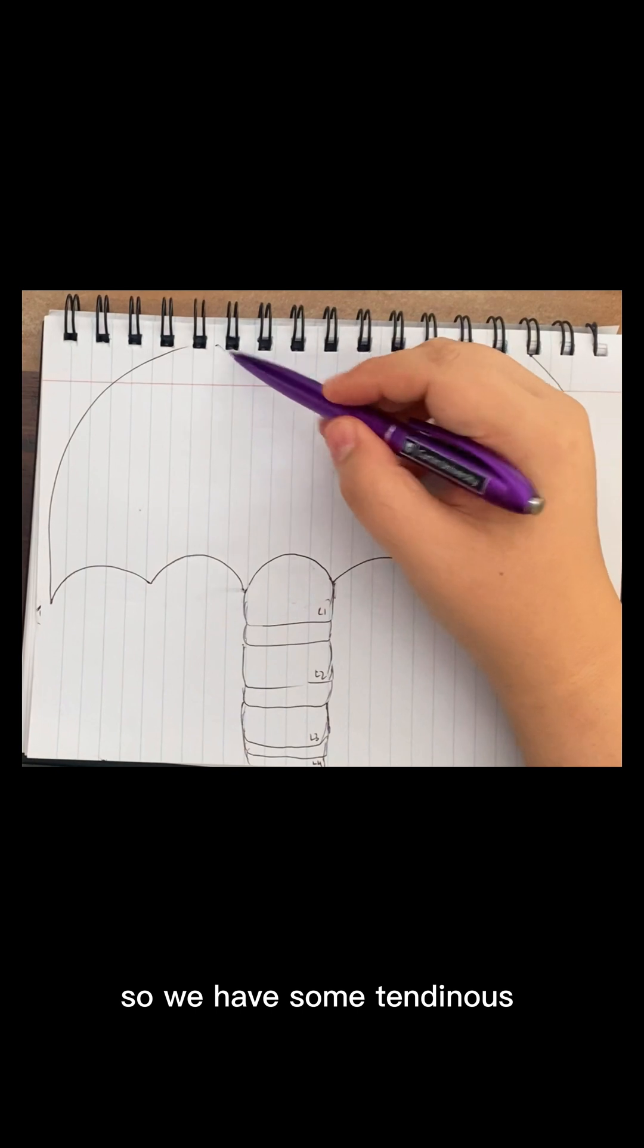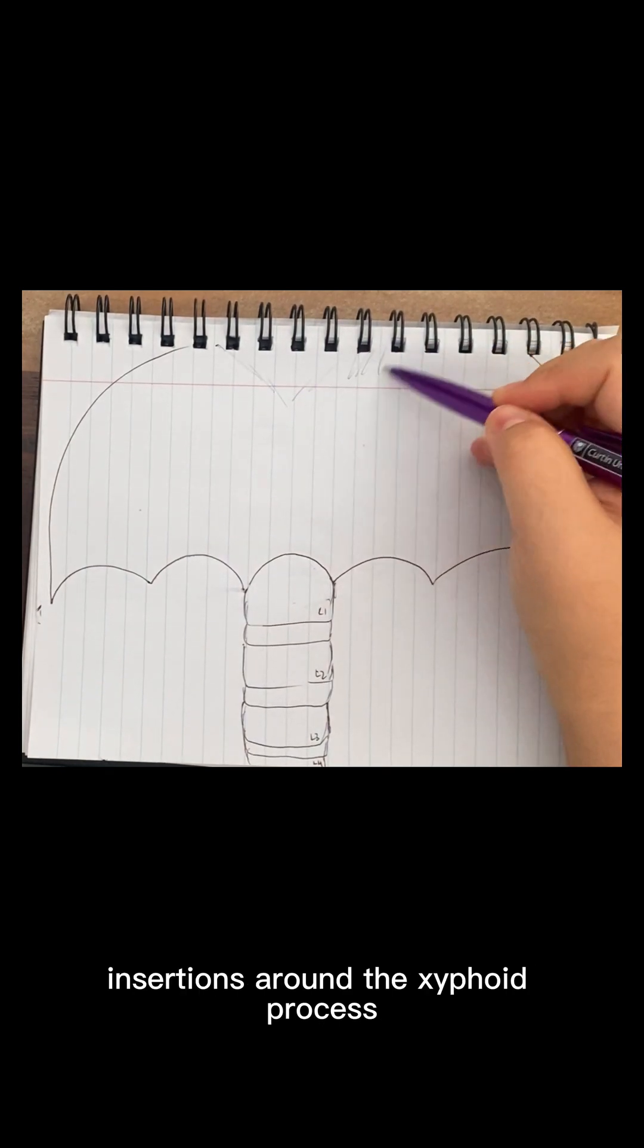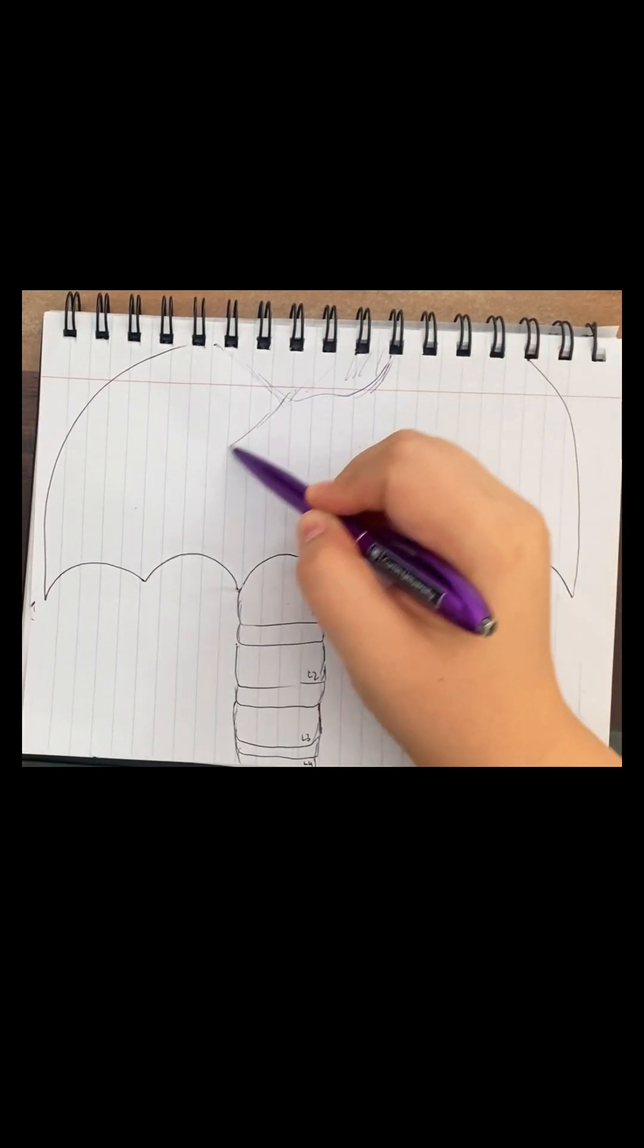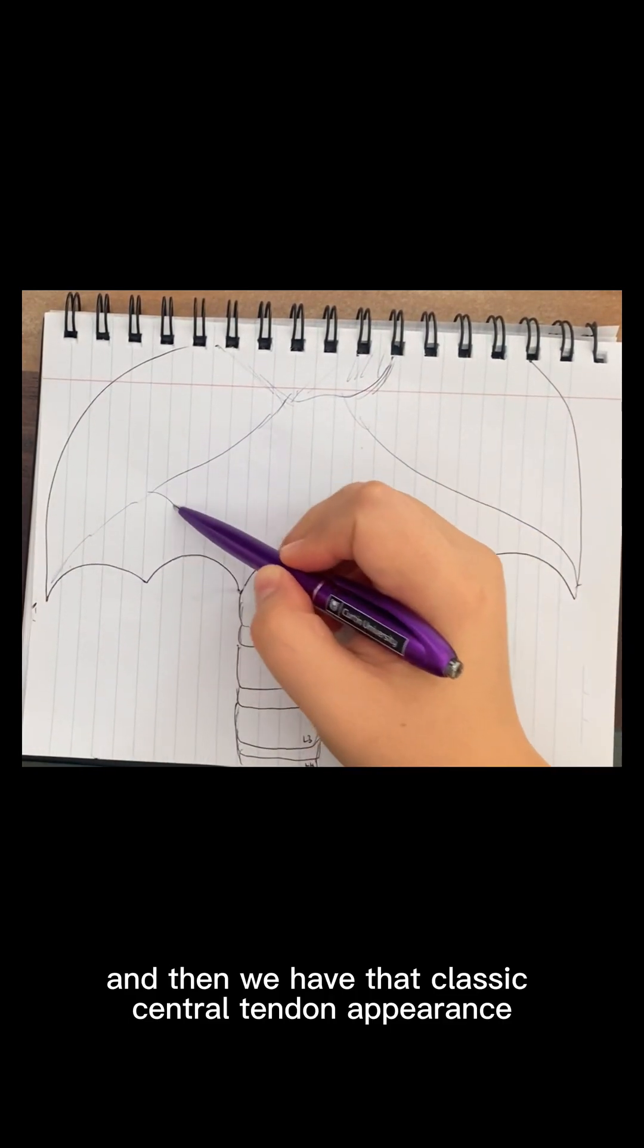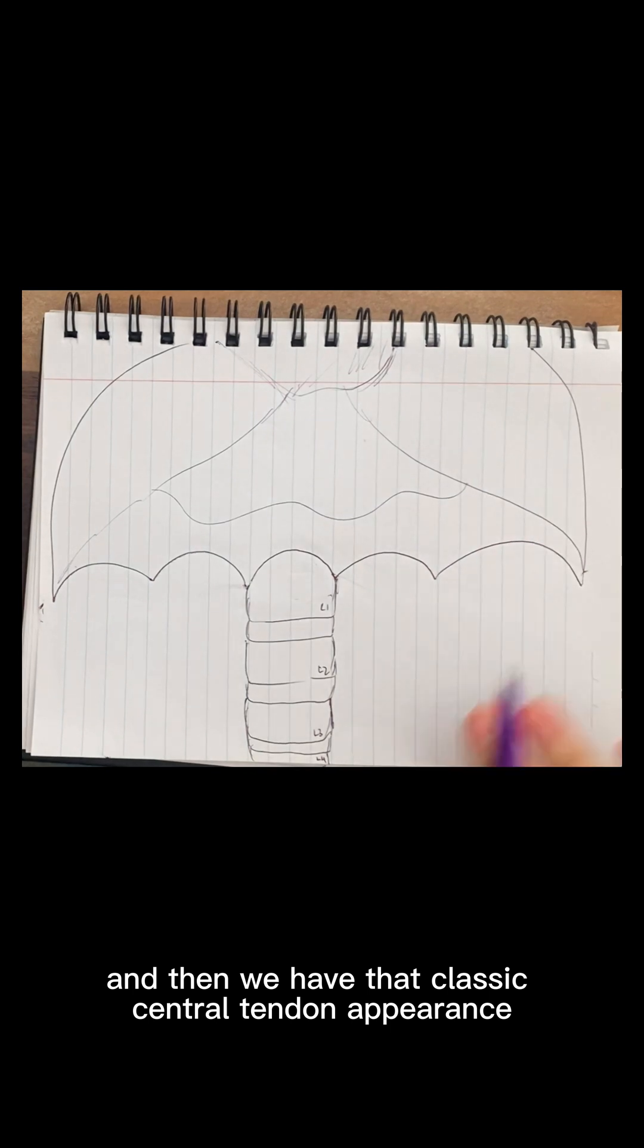So we have some tendinous insertions around the xiphoid process. Then we have some around the ribs. And then we have that classic central tendon appearance of the diaphragm.